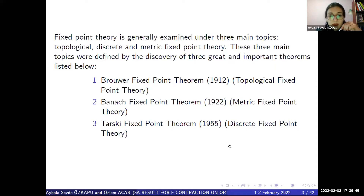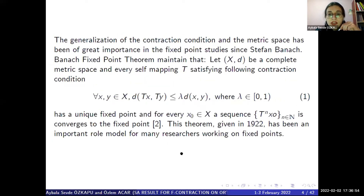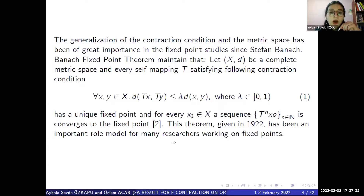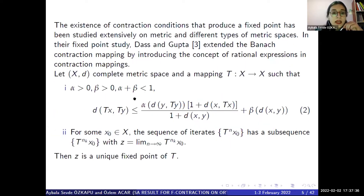Firstly, the Brouwer fixed-point theorem. Secondly, the Banach fixed-point theorem. Thirdly, the Tarski fixed-point theorem. The generalization of the contraction condition and the metric space has been of great importance in fixed-point studies since Stephen Banach. The Banach fixed-point theorem states that let (X, d) be a complete metric space and every self-mapping T satisfying the contraction condition has a unique fixed-point, and for every X₀ in X, the sequence T^n(X₀) converges to the fixed-point. This theorem, given in 1922, has been an important role model for many researchers working on fixed-points.